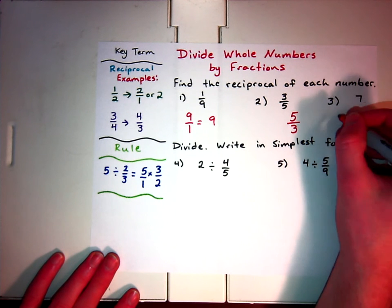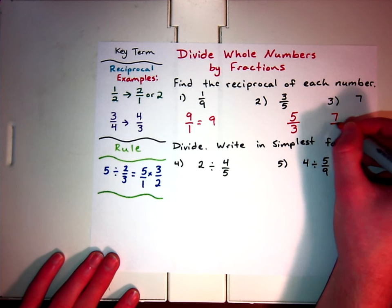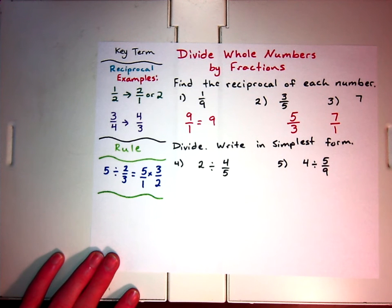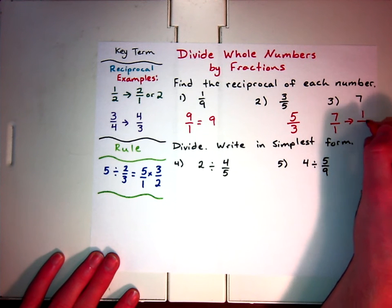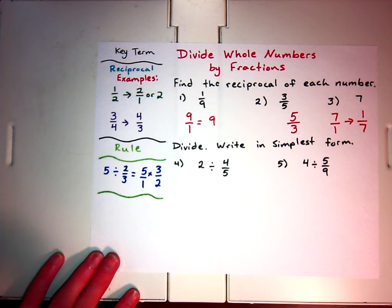7 could be written as 7 over 1 if we needed to see it in fraction form. So if we need to turn 7 into its reciprocal, that reciprocal is going to be 1 over 7. So any whole number, we can remember, if we wanted it in fraction form, could just be that number over the number 1, and then you could find the reciprocal quite easily from there.